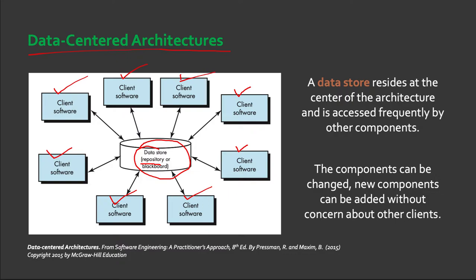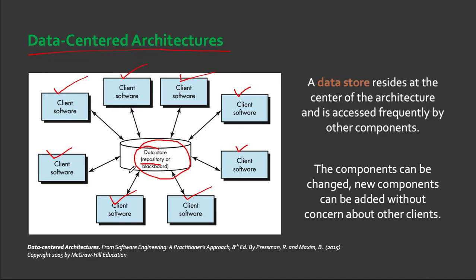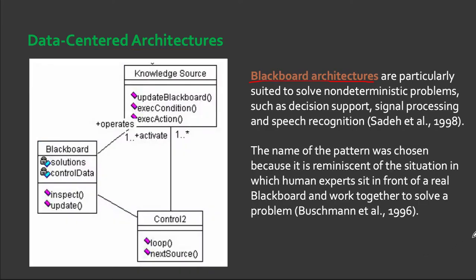Data-centered architecture consists of different components that communicate through shared data repositories. We have a data store that contains a repository or what we call a Blackboard. The components access a shared data structure and are relatively independent in that they interact only through the data store — there is no direct communication from one component to another; communication goes from the component to the data store. A variation of this architecture is what we call Blackboard architecture. In Blackboard, the data repository sits at the heart of the architecture, but this central component is active, not passive.